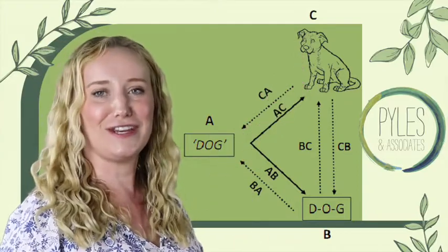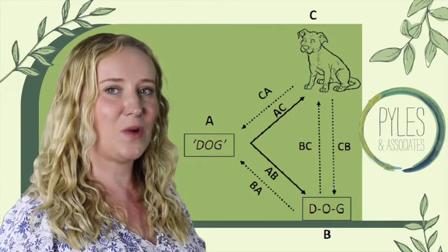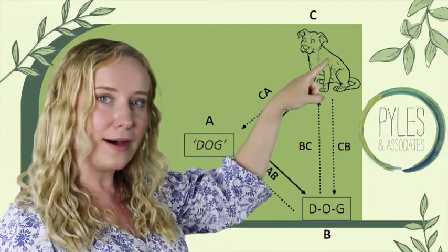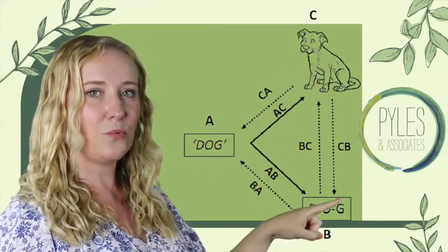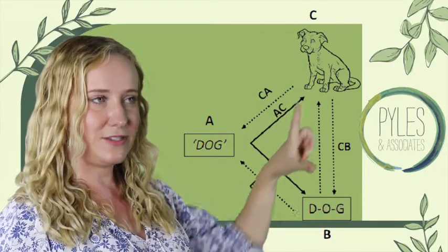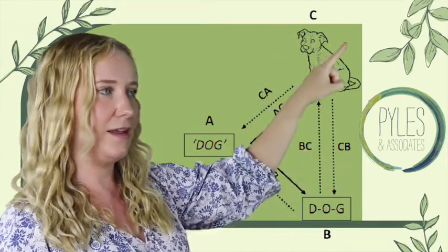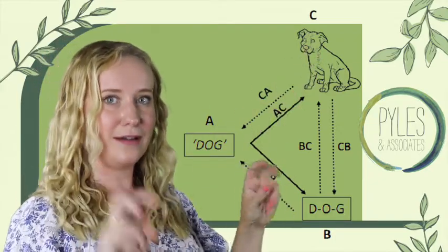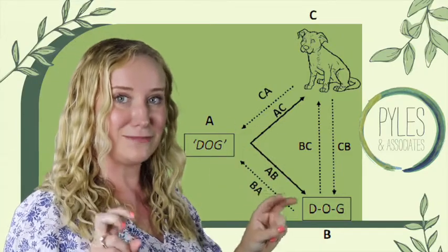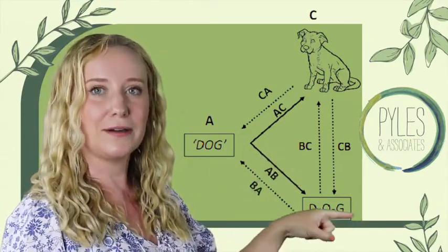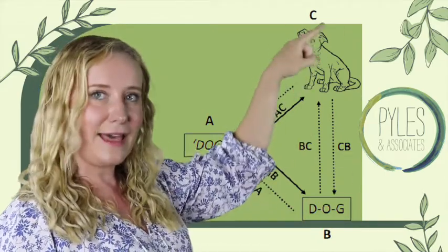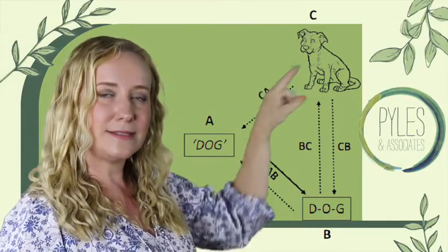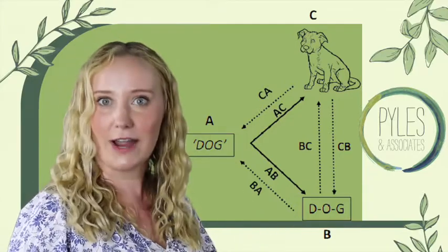Our third relation is transitivity. This is when we have two stimuli that we've never put together — for example, a picture of a dog and the written word D-O-G. These two stimuli have never been presented together, but we've taught that this dog picture goes with the auditory stimulus 'dog,' and that the auditory stimulus 'dog' goes with the written word 'dog.' Transitivity is when you can connect that the picture of a dog goes with the written word 'dog,' and it's not taught. You put those two together and that's our derived relation.